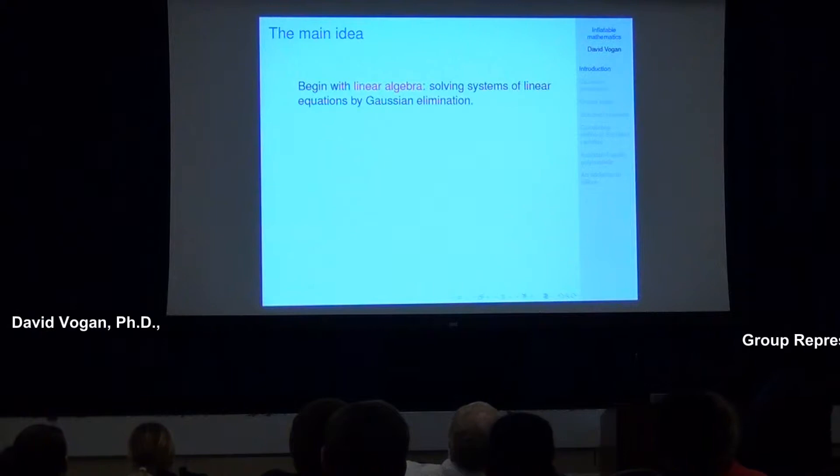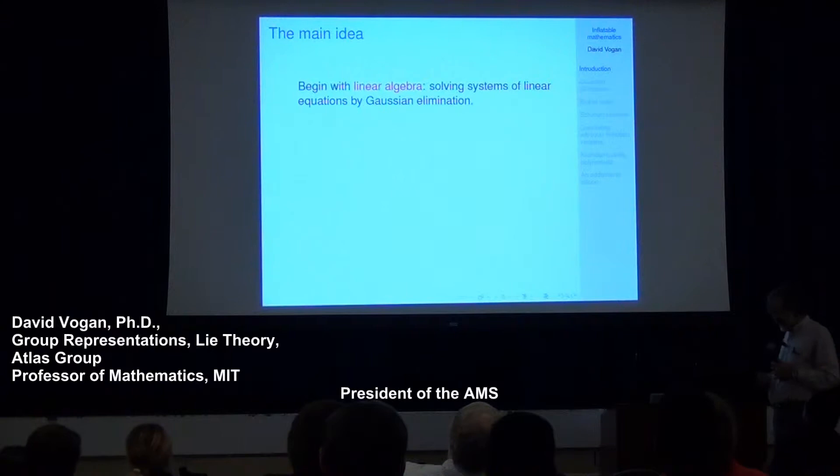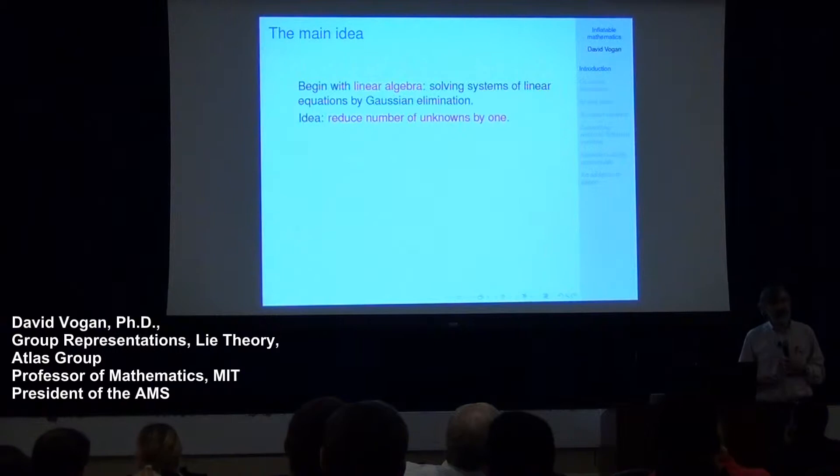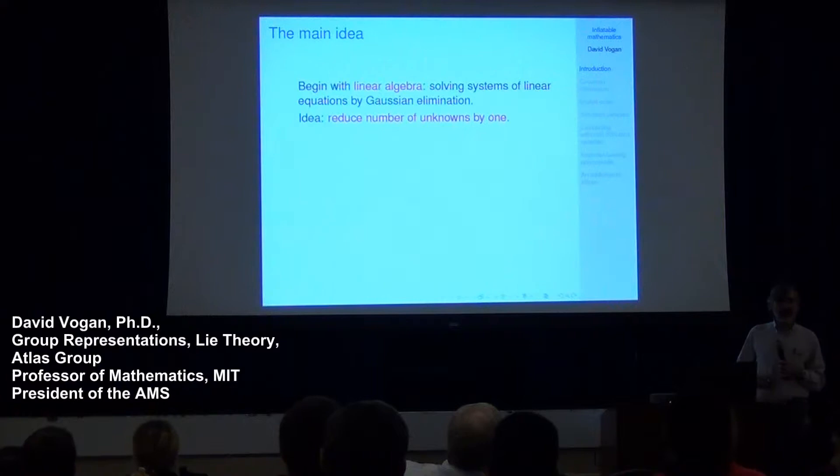What I'm going to talk about has its origins in linear algebra, in solving systems of equations by Gaussian elimination. So what you do in Gaussian elimination is you make a bunch of equations with a bunch of unknowns simpler. Roughly speaking, you want to reduce the number of unknowns by one.